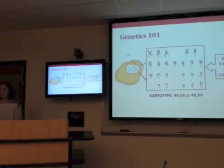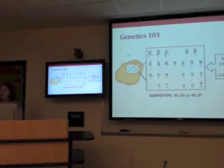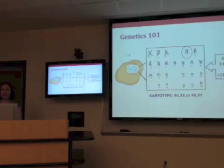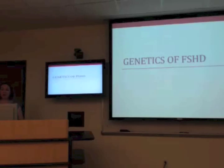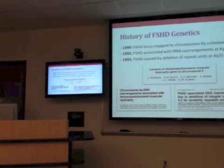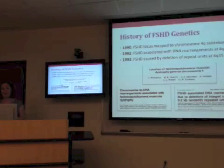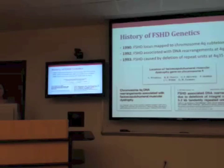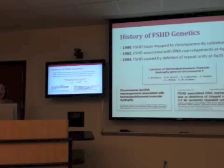A problem anywhere in there — even as small as a change of a single DNA letter — can potentially cause issues with growth, development, or functioning. The chromosome we know is important in FSH is number 4. FSH was first described clinically by two French neurologists in the late 1900s, and around 1990 the FSH locus was mapped to chromosome 4 sub-telomere — at the very tip of chromosome 4. Two years later it was published that FSH is associated with certain DNA rearrangements at 4q35.